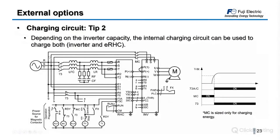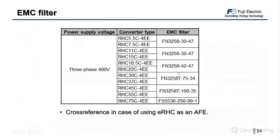For EMC filters, the cross-reference table uses the FN3258 family. Keep in mind: in case the ERHe is working as an active front end (Mode 1), use the reference for the ERHe power; but in Mode 2, the EMC filter must be sized according to the motor and inverter power — not the ERHe power.